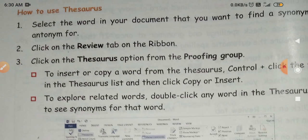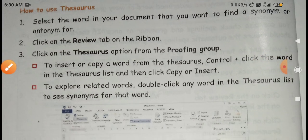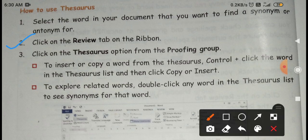How to use thesaurus? First, select the word in your document that you want to find synonyms or antonyms. So firstly you will select a word to use synonyms word or antonyms words. Next, click on review tab on the ribbon.